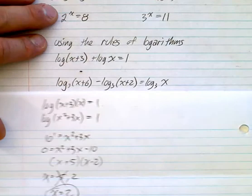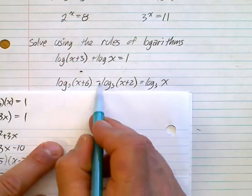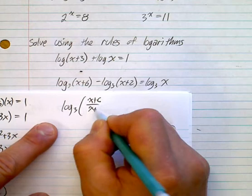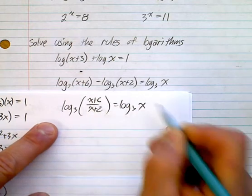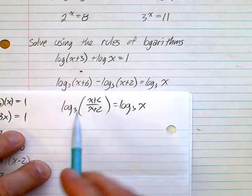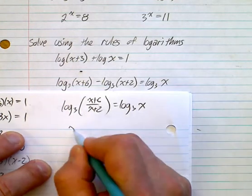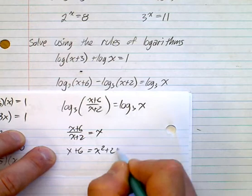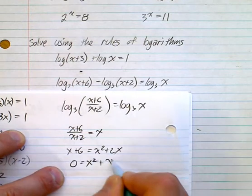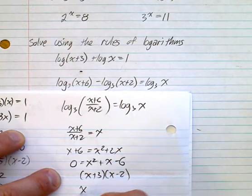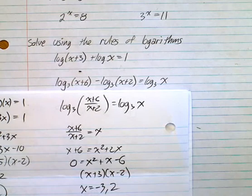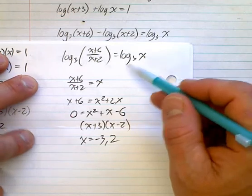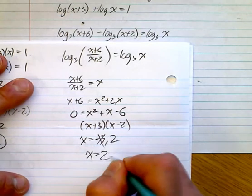Let's move to this one: log base 3 of x plus 6 minus log base 3 of x plus 2 equals log base 3 of x. What we're going to do is combine the left side: log base 3 of (x plus 6) over (x plus 2) equals log base 3 of x. Using the premise that if you have the same base those things are equivalent, we just have (x plus 6) over (x plus 2) equals x. Solving using algebra gives a quadratic: x squared plus x minus 6, so x equals negative 3 and positive 2. Checking: x can't be negative 3, so that's extraneous. The answer is x equals 2.